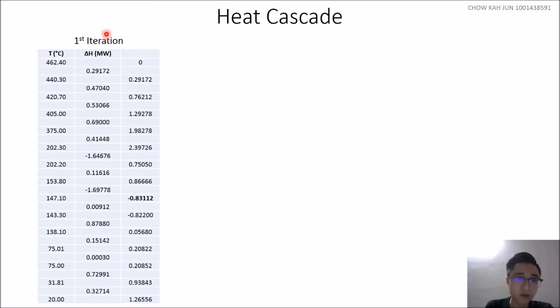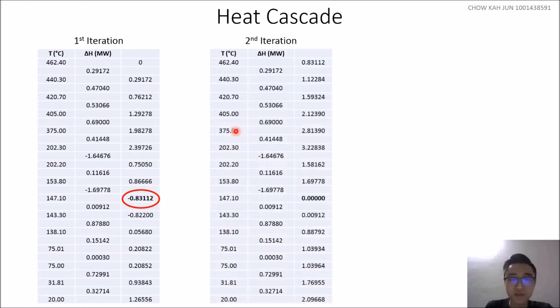As you can see in the first iteration, this is the new set of delta H. For the first iteration, we start by zero. Then we add the value in the middle column to get the subsequent value, and so on. In the first iteration, we take the most negative value and use it as the starting value of the second iteration. Take note we only take the magnitude, not the negative. We do the same thing and should get a zero value in the second iteration.